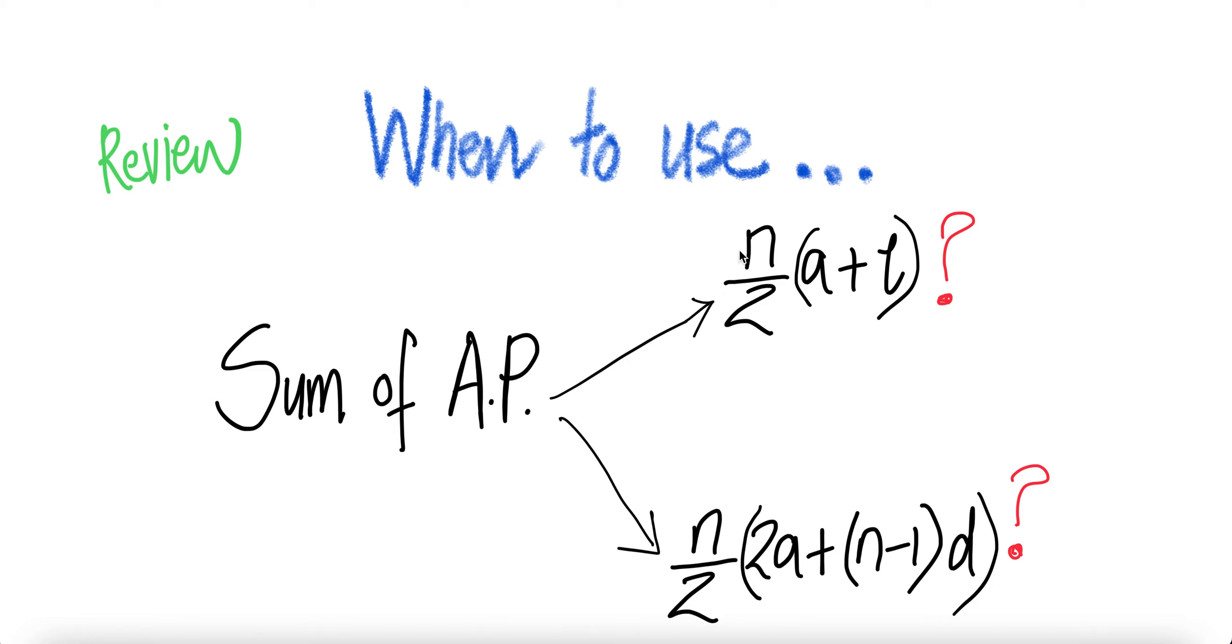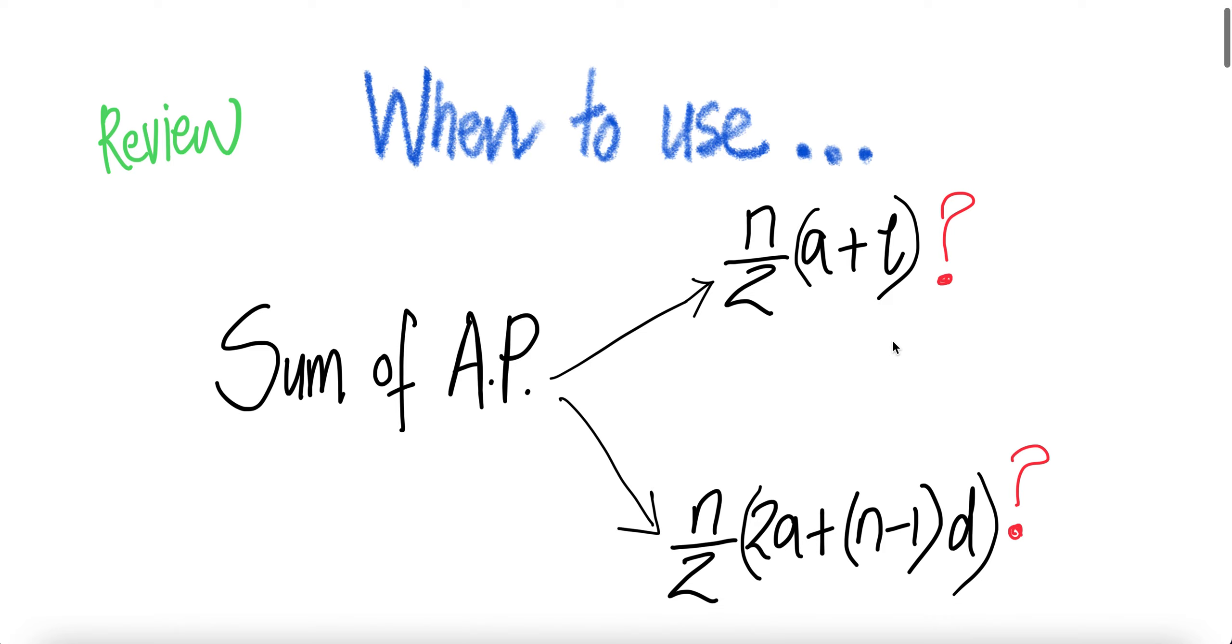The first one is n over two times the first term plus the last term, the value of last term. Then the other one is n over two times twice the first term plus n number of terms minus one times the common difference.